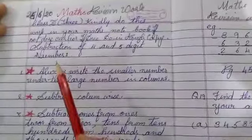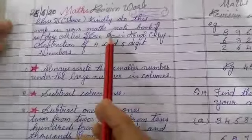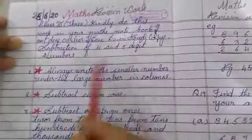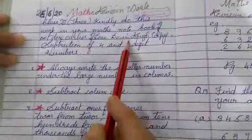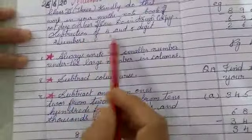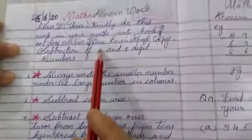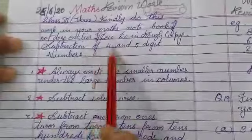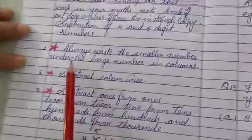Children, welcome to the maths revision class for subtraction. Today we are going to do subtraction work. This I have already done earlier but I want to revise with you. So I will do point-wise subtraction of 4 and 5 digit numbers. I am sending you this work also. If you have not done it in your maths classwork copy earlier you could do it. If you have done, then do this work in your rough copies and learn these points.